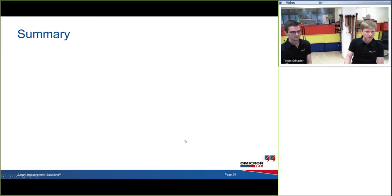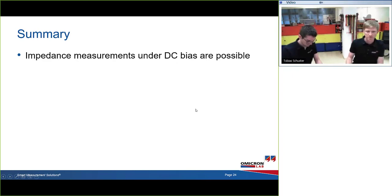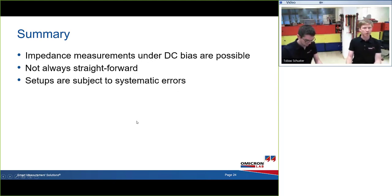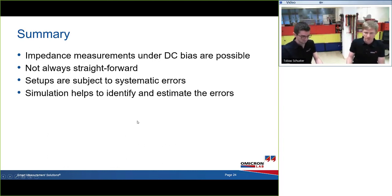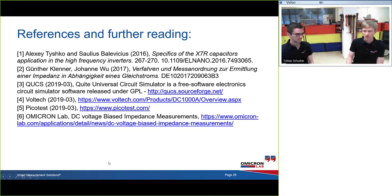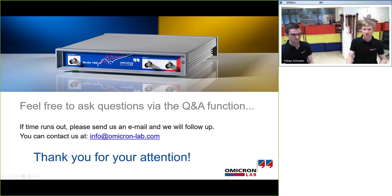In summary, impedance measurements under DC bias are possible but not always straightforward. Setups contain systematic errors that need to be corrected. You can use simulation to identify and estimate errors, and use the Bode Analyzer Suite to compensate. Further reading is available on the Picotest and Omicron Lab websites including application notes. Thanks for your attention.